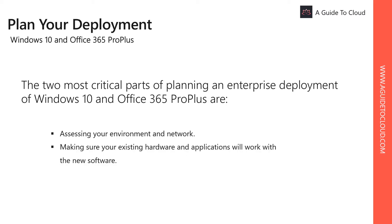The two most critical parts of planning an enterprise deployment of Windows 10 and Office 365 Pro Plus are assessing your environment's network and making sure that existing hardware and applications will work with the new software. Almost all applications written in the past 10 years will run on Windows 10, and almost all add-ins and Visual Basic Applications macros based on previous versions of Office will continue to work on latest versions of Office as well.